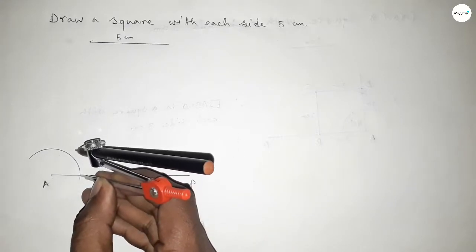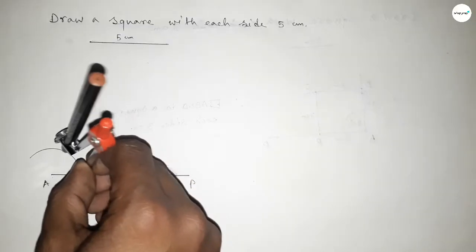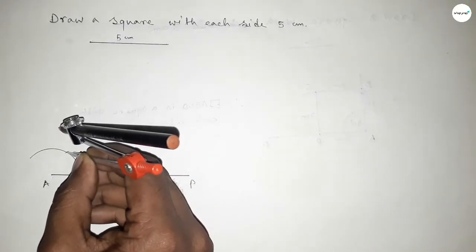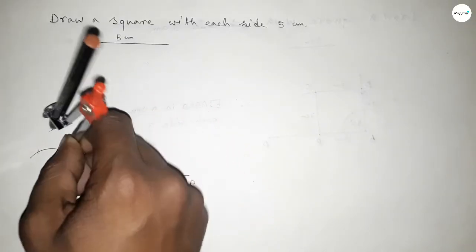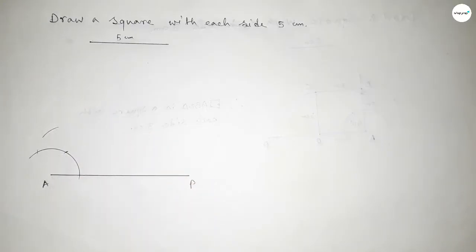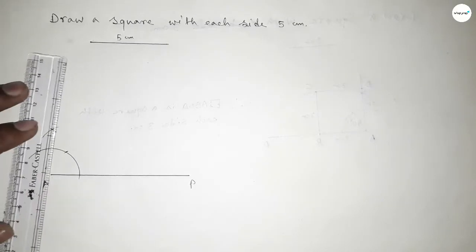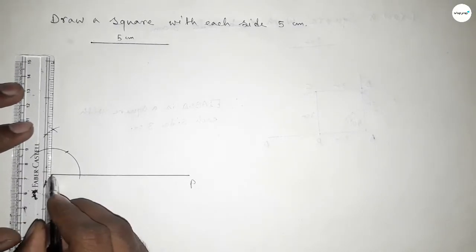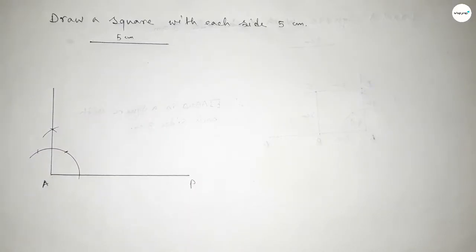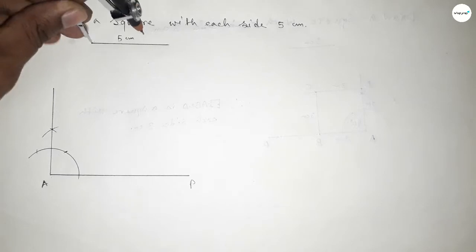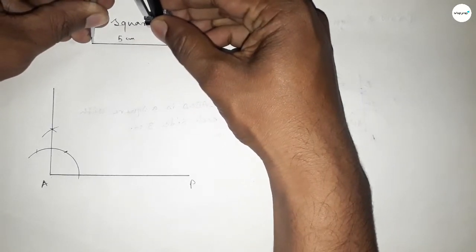With the same length, putting the compass here and cutting here, then putting the compass here and cutting here, and drawing an arc with the same length. Putting the compass here and cutting here so both curves intersect at a point. Now joining this — and this is a 90 degree line.